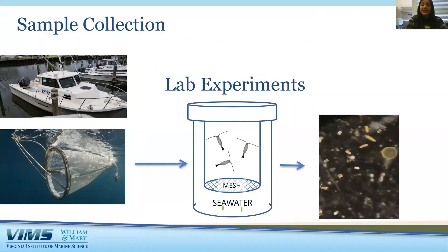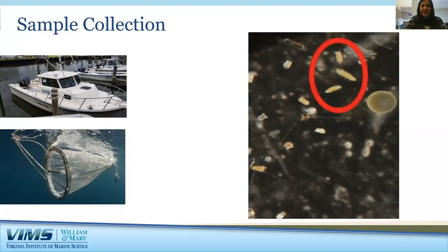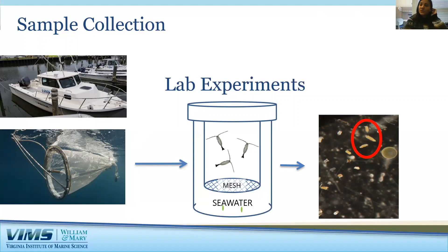Here you can see what the fecal pellets look like — they're in this red circle and they're a nice green color because they're full of phytoplankton that the copepods or other zooplankton have been eating. Using what I learn about which animals are out there in the Chesapeake Bay and how fast they're cycling carbon, I can determine how fast carbon is actually being cycled through the Bay. This information is very important for making models to help combat climate change impacts by making decisions on how to limit our carbon dioxide emissions.